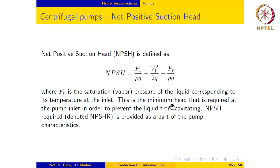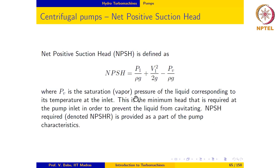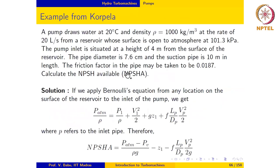Pump manufacturers usually provide the Net Positive Suction Head Required, denoted NPSH_R, as part of the pump characteristic. We can also evaluate the available NPSH if we know a few more details about the operating conditions. Let us work out an example to illustrate how we calculate the available net positive suction head.